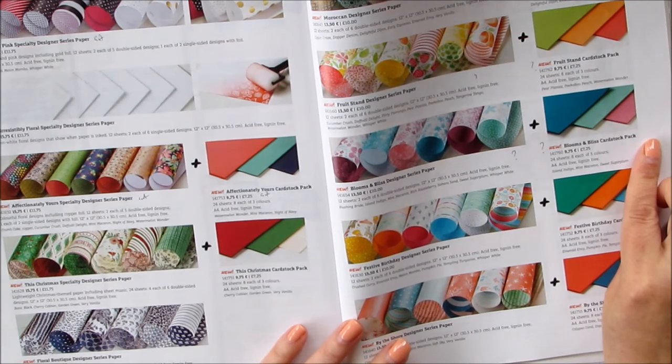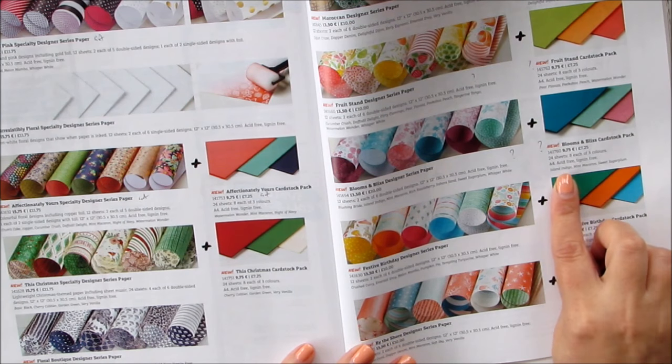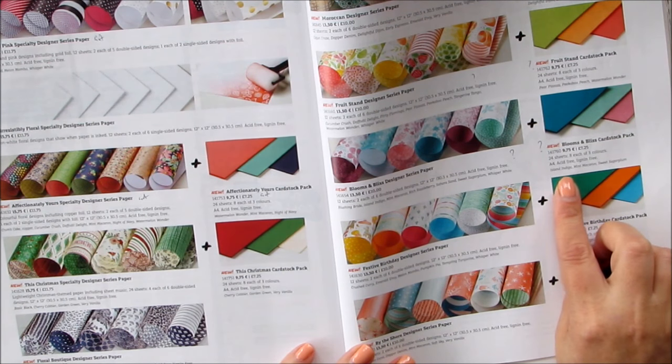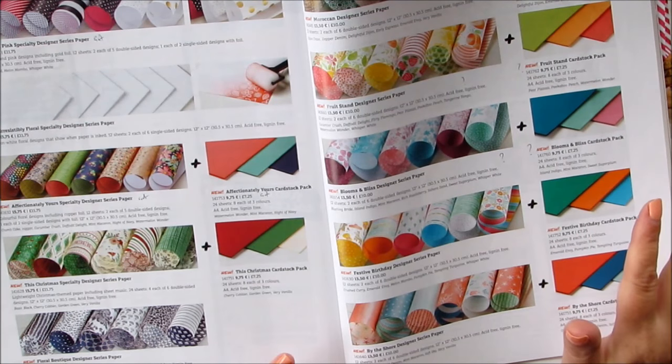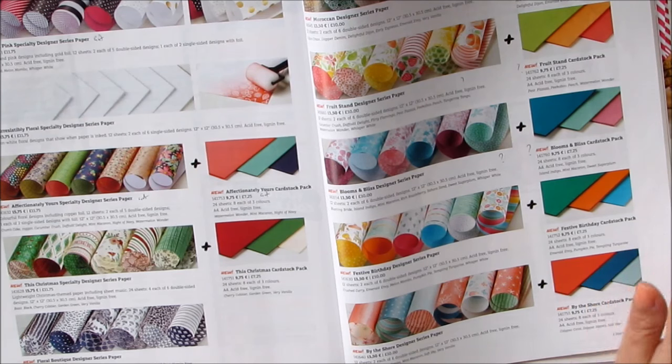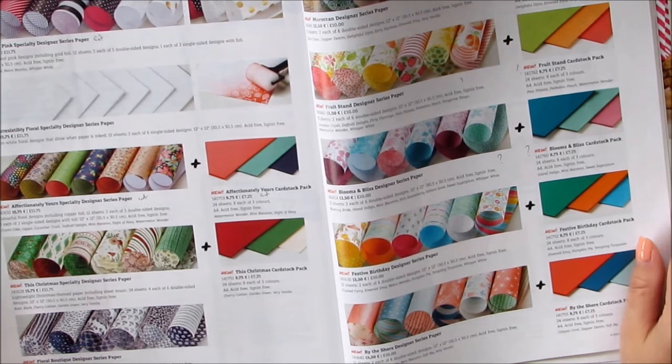And then the cardstock which they've packed with it. 24 sheets, eight of each of the three colors. And they've given you Island Indigo, Mint Macaron and Sweet Sugar Plum. So they just make it super easy that you can basically order the papers, the cardstock and the stamp set and you're ready to go to make beautiful projects.